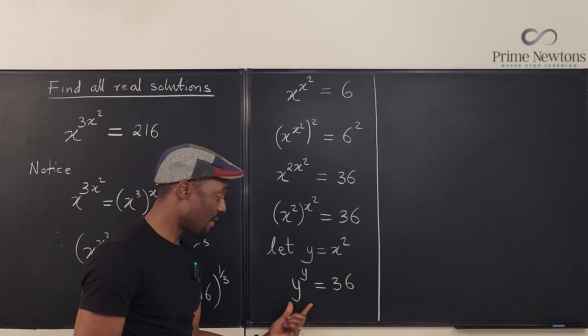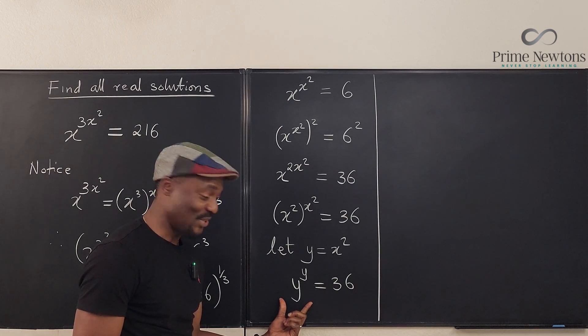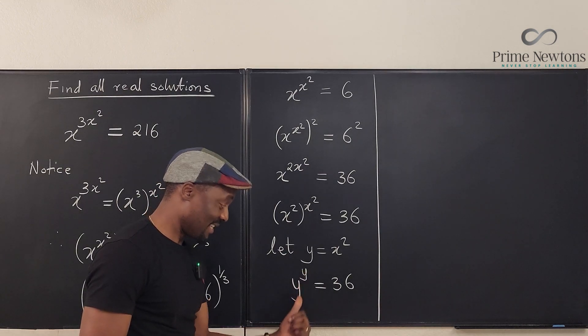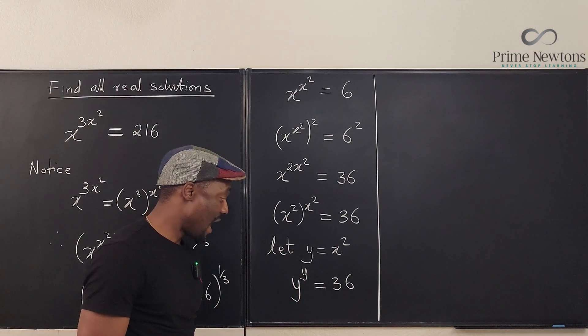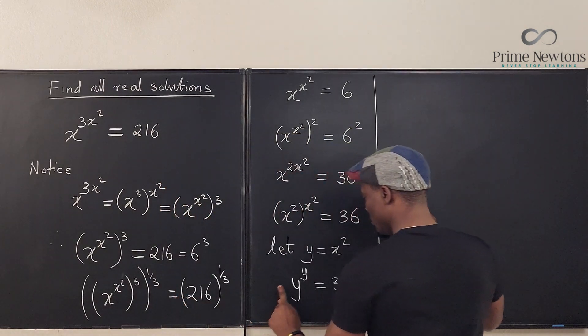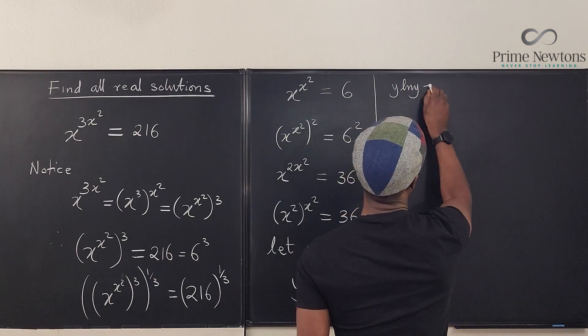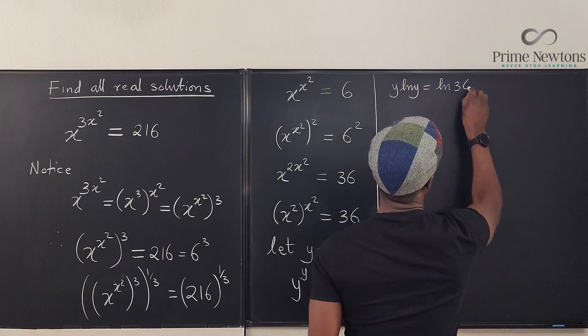So what should we do? We've got to solve this. Lambert W function. Because this is a power tower, now let's bring this down first. It's the first step every time. So we take the natural log of both sides. We're going to have y ln of y equals ln of 36. In order to solve this, we have to get our power e to the power.